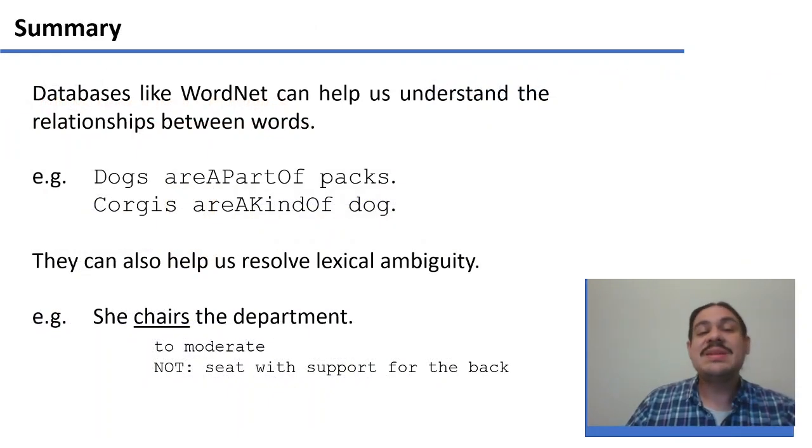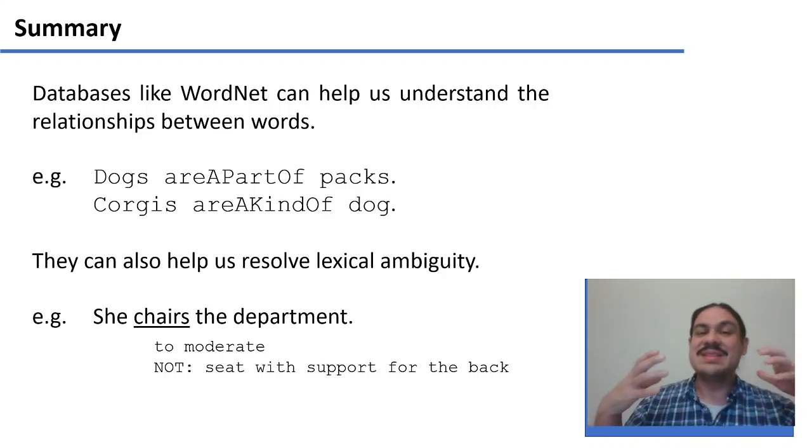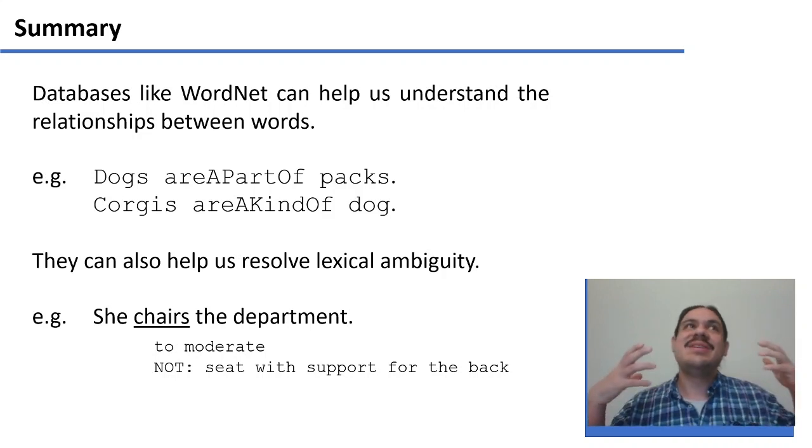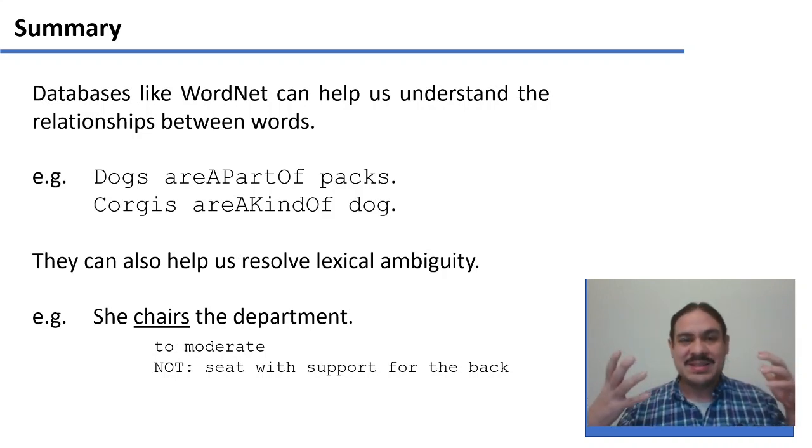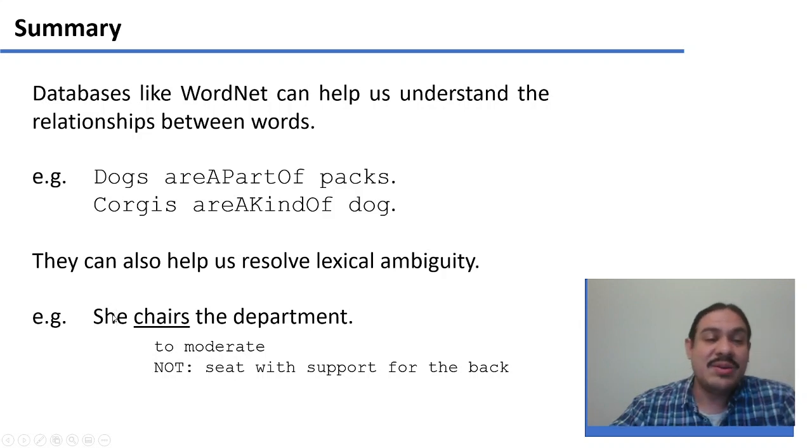In summary, databases like WordNet can help us understand the relationships between words. So, for example, dogs are a part of a pack and corgis are a kind of dog. And this can help us extend the knowledge that we have from a knowledge base. So, we know that if something applies to a dog, it'll also apply to a corgi. WordNet also helps us resolve lexical ambiguity. So, we can note that if we get the sentence, she chairs the department, this word means moderate and not a seat that supports your back.